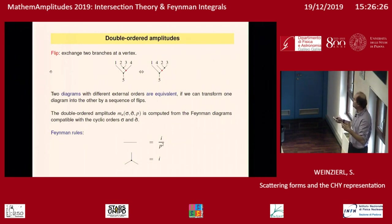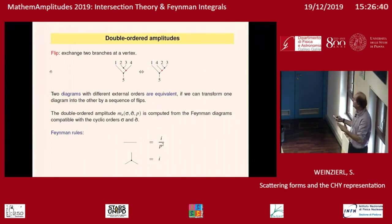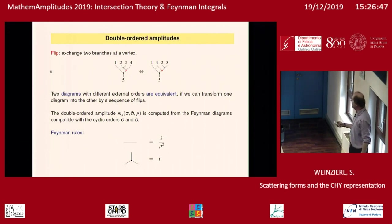For example, for the order 1,2,3,4,5: if I exchange two lines at a vertex, I get another graph where the cyclic order becomes 1,4,2,3,5. This contributes to the double cyclic-ordered amplitude with that first order and this second order. The Feynman rules are rather simple since it's just a scalar theory.